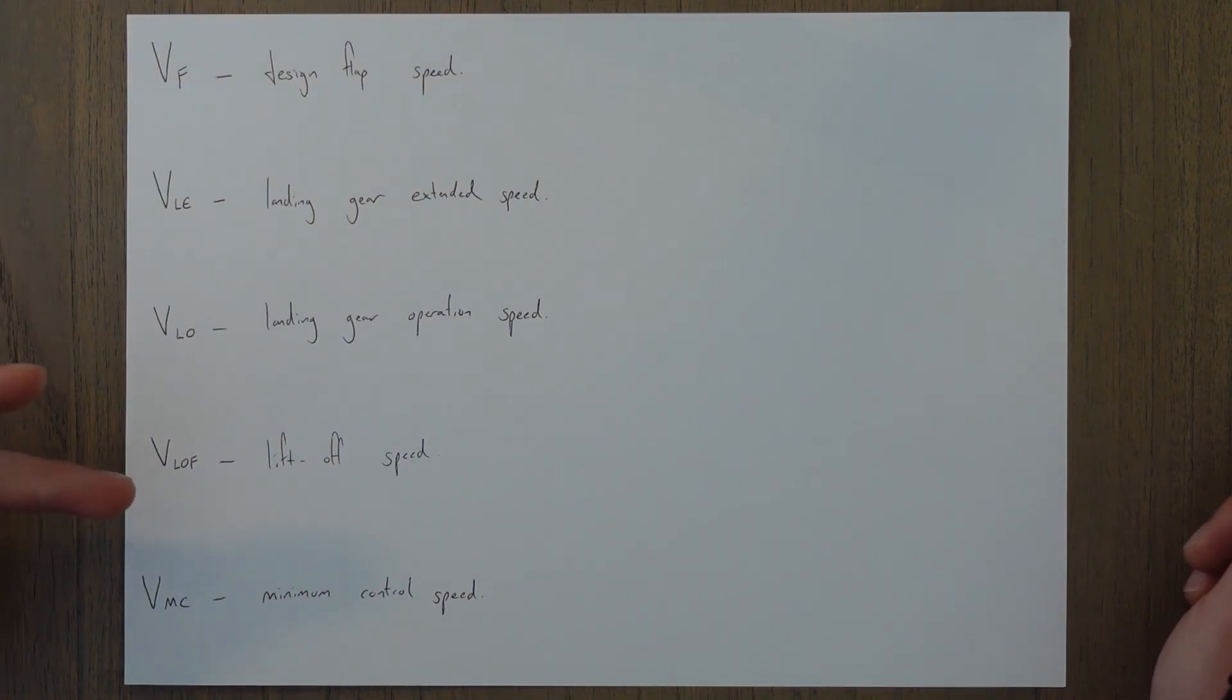VLOF is the liftoff speed. This is the speed where after rotating the front wheel off the ground, the other wheels come off the ground as well and the aircraft is fully in the air.